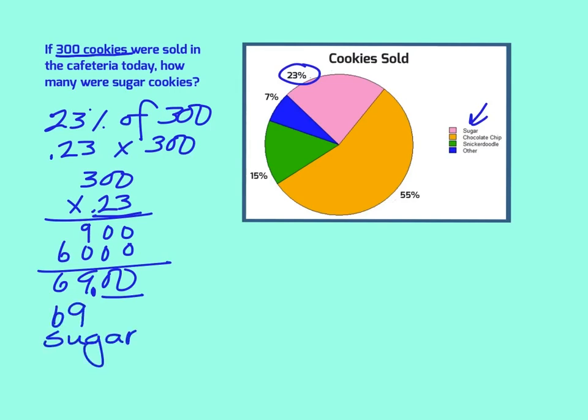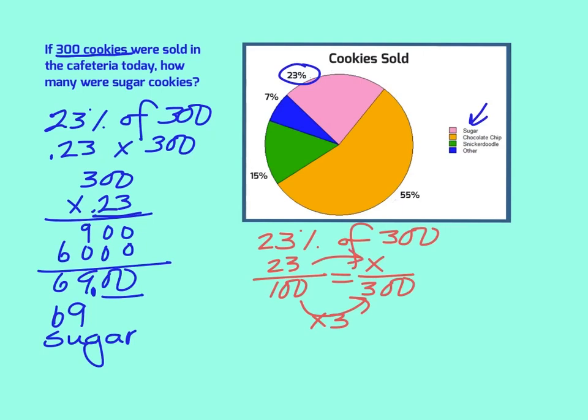Now you could have also set this up using fractions. In this case, it might have been a little easier to use your fractions if you don't have a calculator. So 23% of 300, well, we know 23% really means 23 out of 100, and we're looking for how many out of 300. You can see this is really just three sets of 100, so that means you can multiply by 3 on the top. 23 times 3 is 69, and again, 69 sugar cookies.